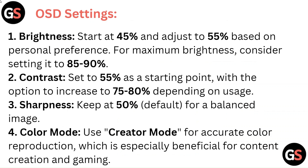Contrast: Set to 55% as a starting point, with the option to increase to 75-80% depending on usage. Sharpness: Keep it at the 50% default for a balanced image.